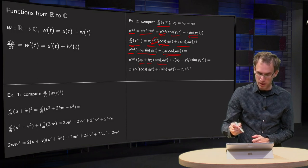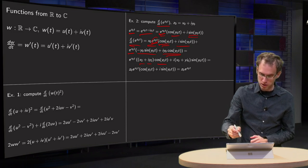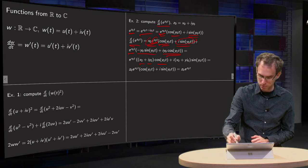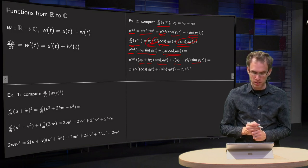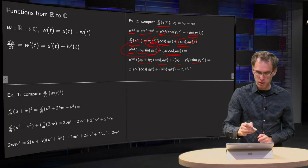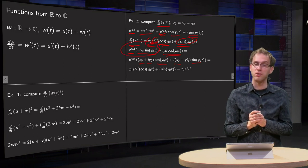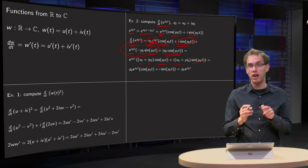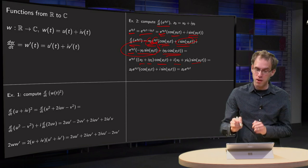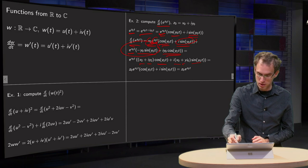And we have e^(x₀·t) times x₀·sin(y₀·t) and i times sin(y₀·t), and finally e^(x₀·t) times −y₀·sin(y₀·t) — noting that −y₀ equals i²·y₀, so that equals i·y₀·i.